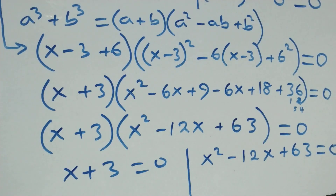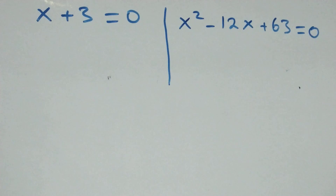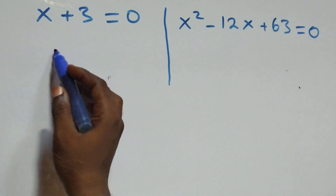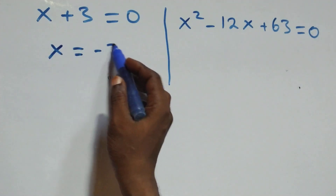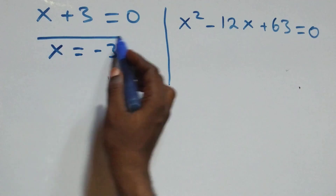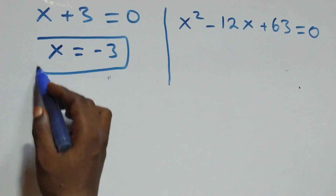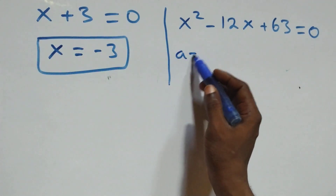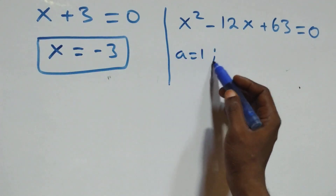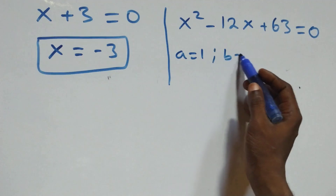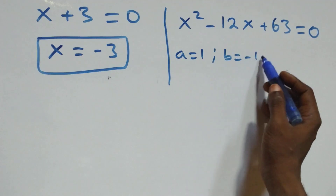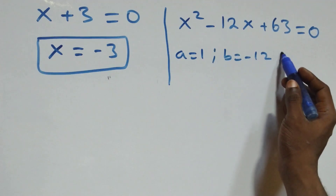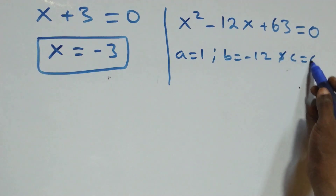We now have two possible cases: x plus 3 equals to 0, giving x equals minus 3, which is the real solution. Or we have x squared minus 12x plus 63 equals to 0, a quadratic equation, where a equals 1, b equals minus 12, and c equals 63.